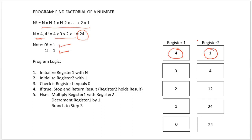During each iteration we must check if register 1's value has reached 0, because we cannot go beyond 0 — so 0 is our terminating condition. At every iteration we check whether register 1 has reached 0. Since 0 factorial is 1, when register 1 reaches 0 we stop processing and the final result is stored in register 2.